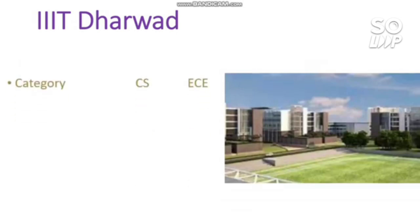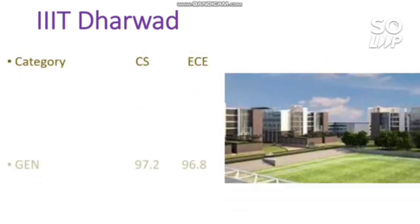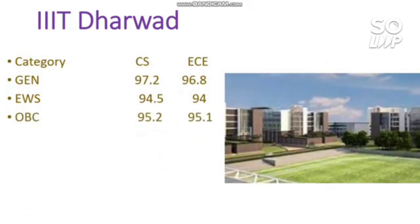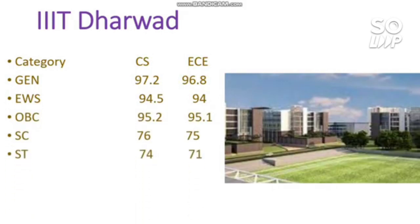IIIT Dharwad: cutoff for CS and EC. General requires 97.2 and 96.8 percentile. EWS requires 94.5 and 94. OBC requires 95.2 and 95.1. ST requires 70 percentile for CS and 67 percentile for EC.